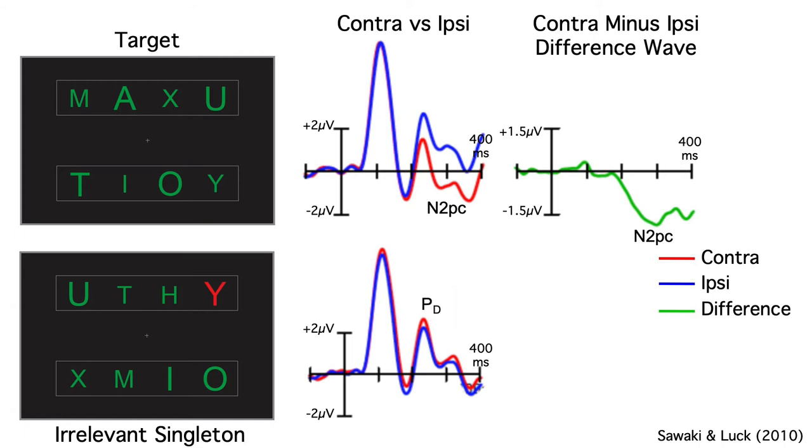This is called the distractor positivity, or PD. Risa thought she was seeing evidence that people were suppressing the singleton rather than being captured by it. But look at how small that effect is. I wasn't convinced.